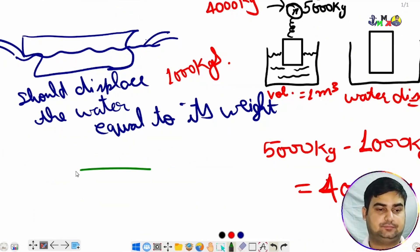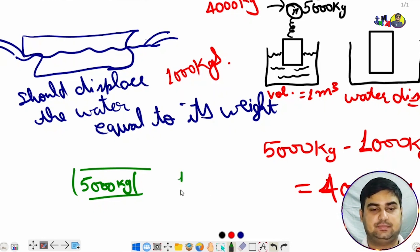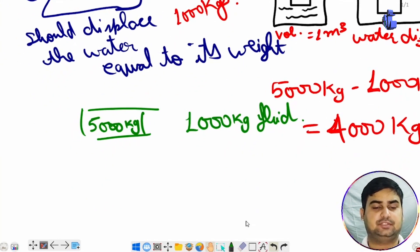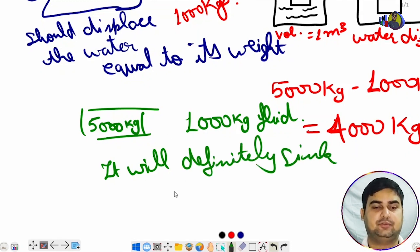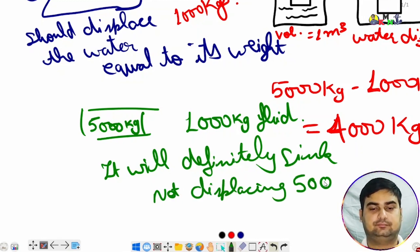If we have this 5000 kg block displacing 1000 kg of fluid, it will definitely sink. Why is it sinking? Because it is not displacing 5000 kg.